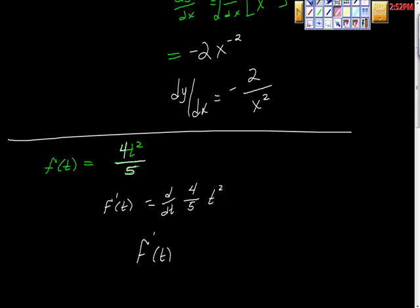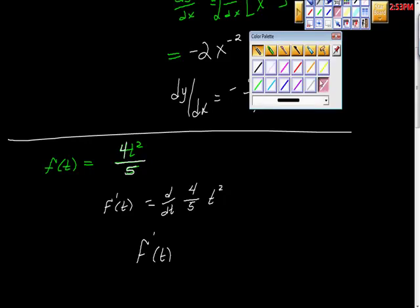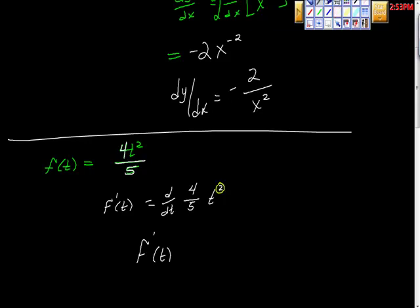f'(t), same thing we agreed that we were going to do. We're going to take this 2, we're going to multiply it here, so it's equal to 8 over 5. That's this 5 right here. We're going to decrement the exponent by 1, so this becomes t to the 2 minus 1 power, which is just t. And there's our derivative, so not bad.